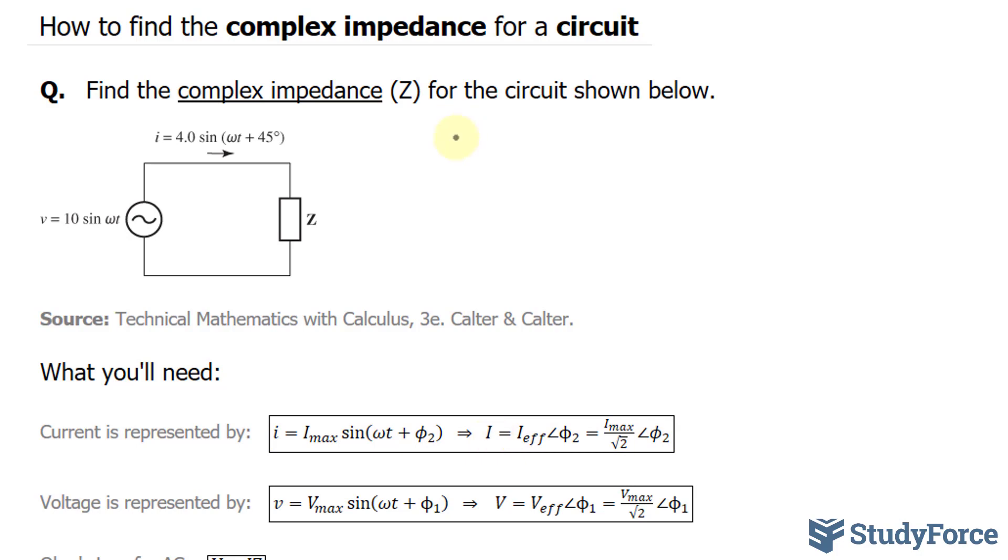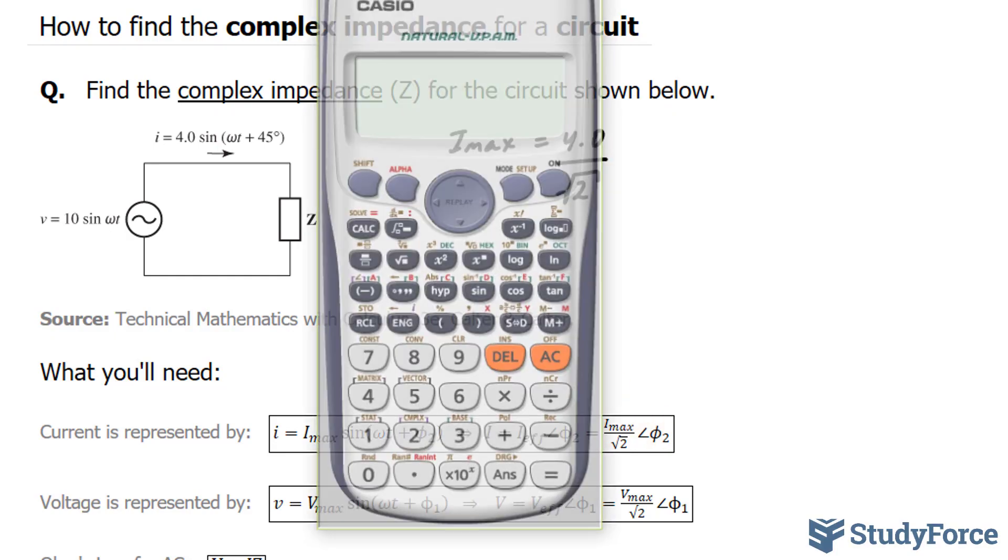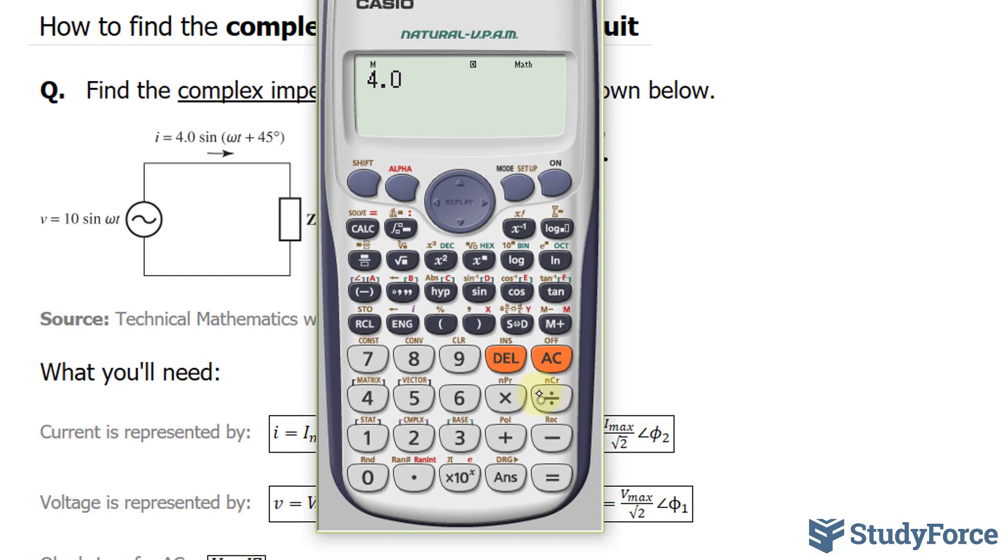The Imax right now, as mentioned, is the amplitude of 4.0. I want to put this equation into this format, so I'll take this number and divide it by the square root of 2. 4.0 divided by the square root of 2 gives me approximately 2.83.